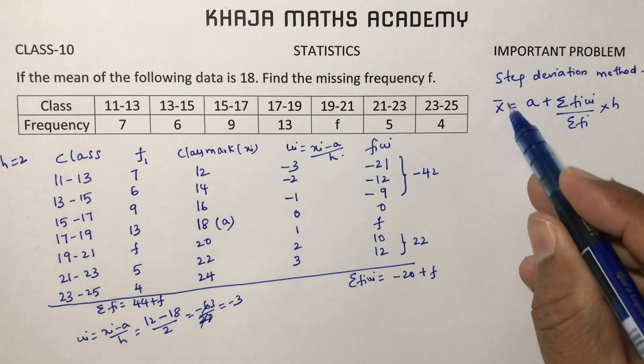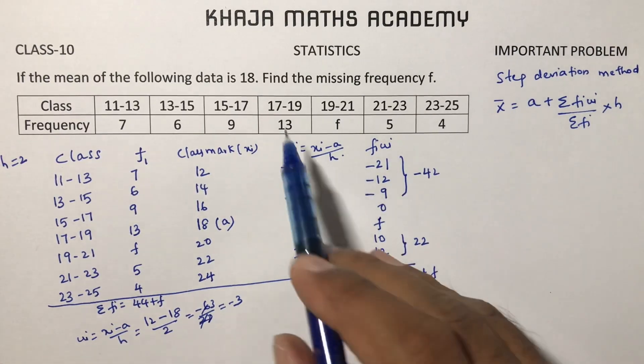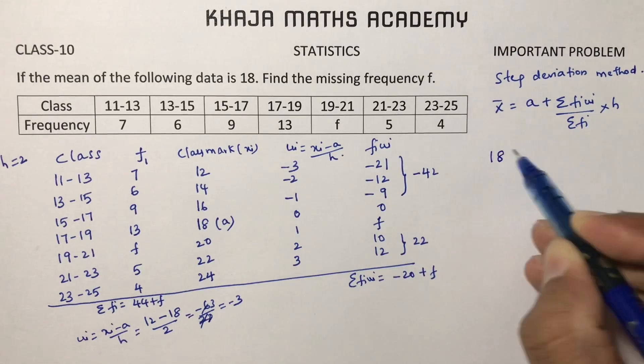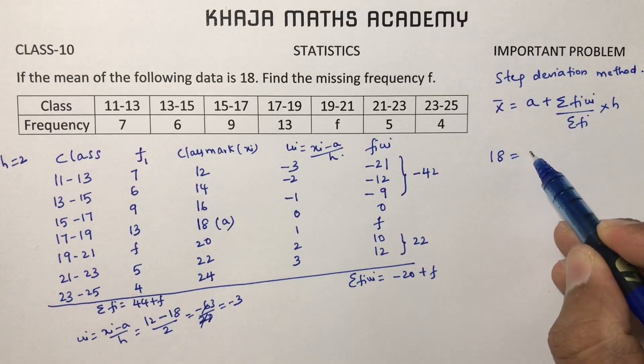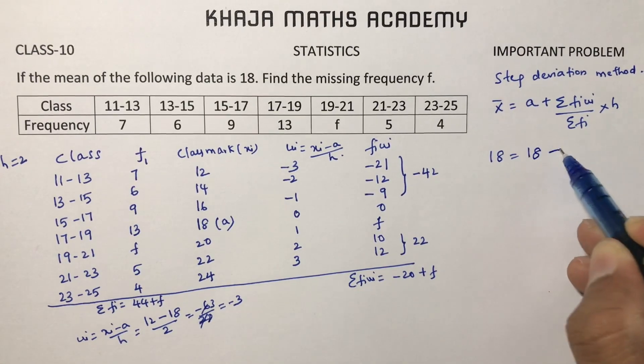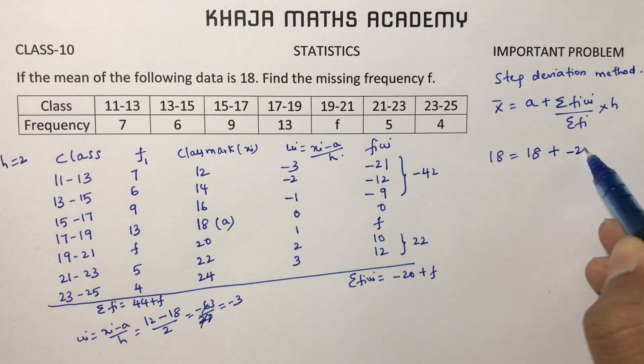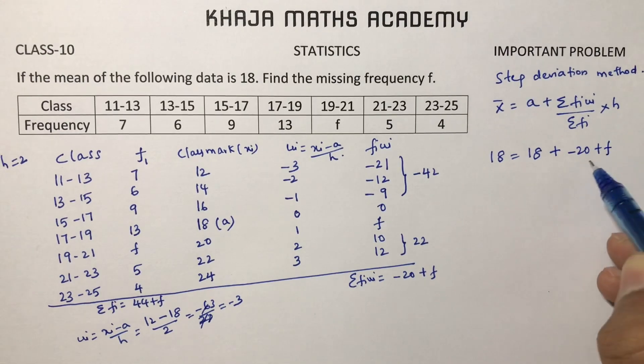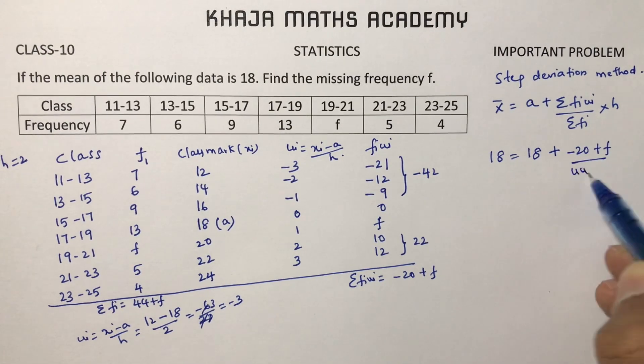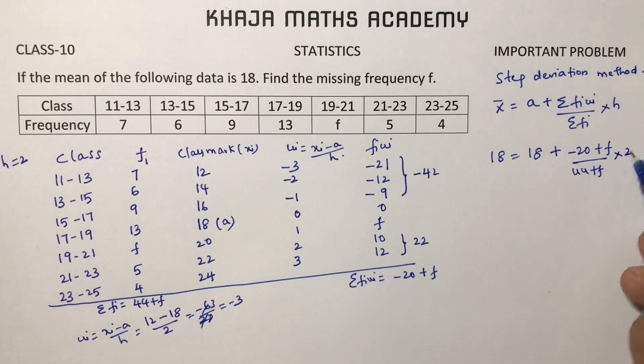Now substitute in the formula. Mean is 18. A, the assumed value, is also 18. Sigma Fi ui is minus 20 plus F by 44 plus F into 2.